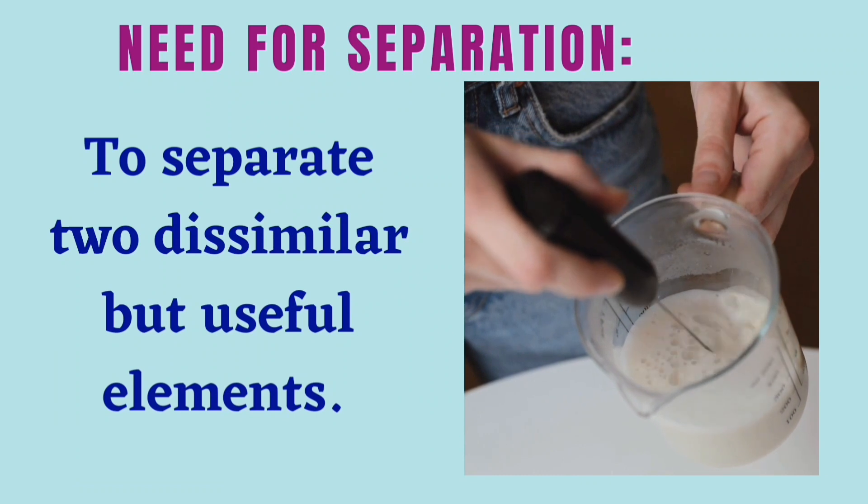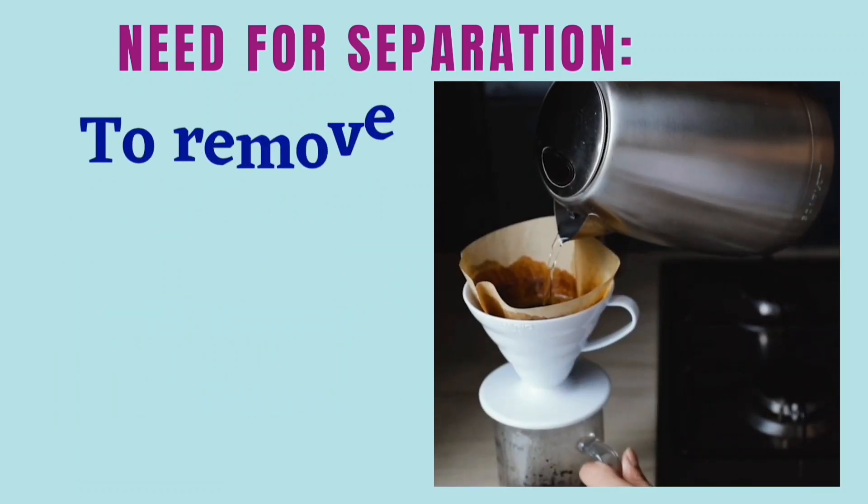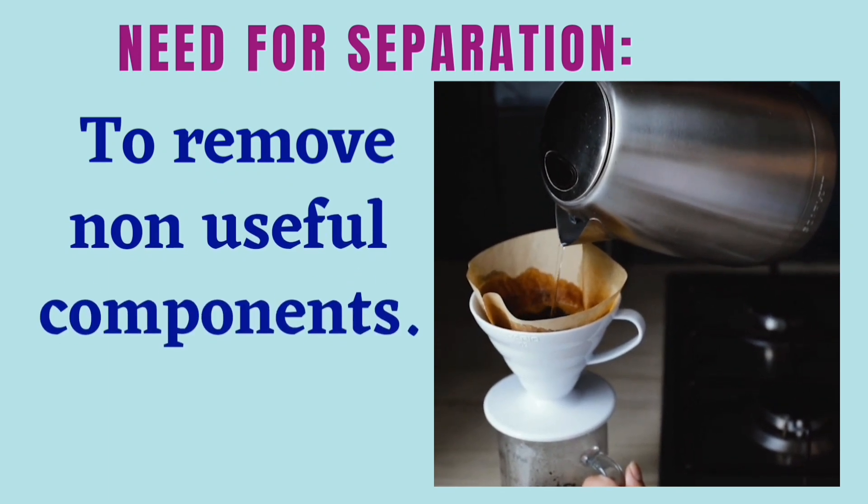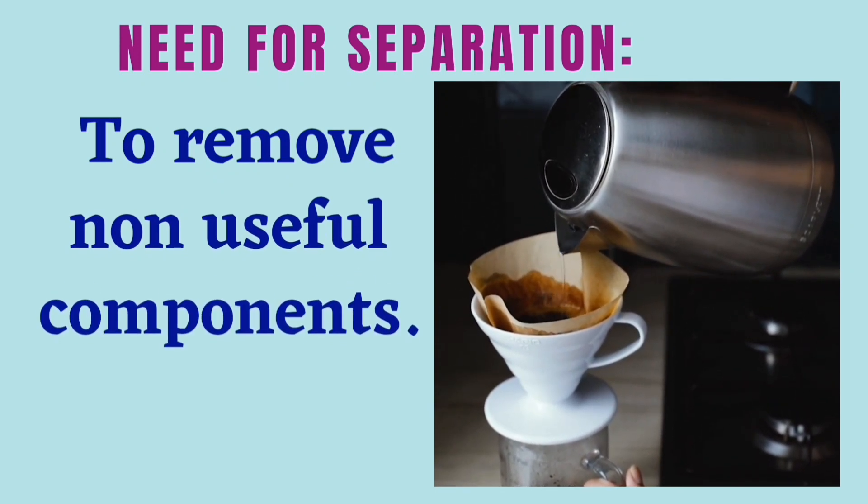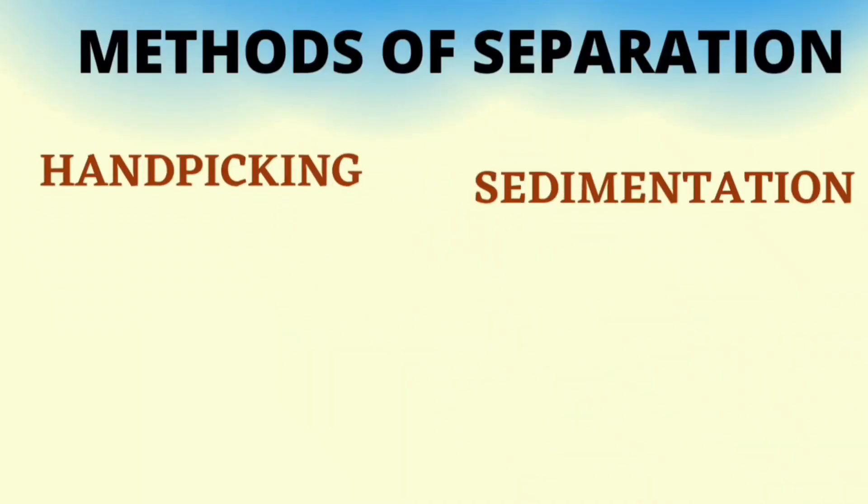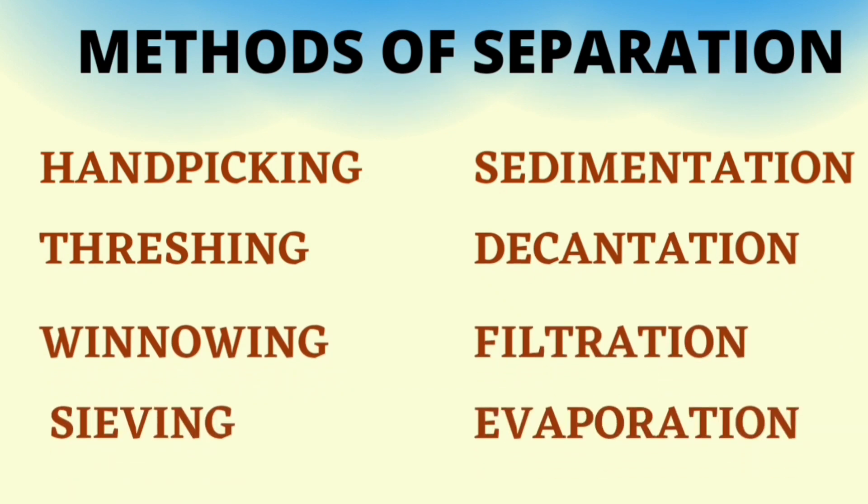Separation is used to remove non-useful components from the mixture, like tea leaves from liquid. Separation is done based on the size and type of material. There are many methods of separation like hand picking, threshing, winnowing, sieving, sedimentation, decantation, filtration, and evaporation.